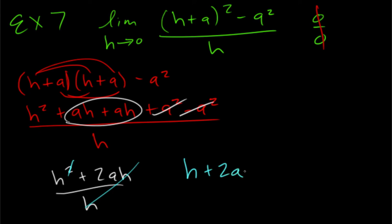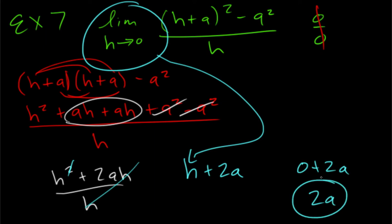So we end up with h plus 2a. And now we apply the limit. So we're going to plug in a zero for h. And so our limit overall is going to be 2a. If you need additional help, please come to Math Lab. Until then, see you later.